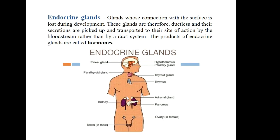Here comes endocrine glands. These are glands whose connection with the surface is lost during development. These glands are therefore ductless, and their secretions are picked up and transported to their site of action by the bloodstream rather than by a duct system. The products of endocrine glands are called hormones. This diagram shows the location of different endocrine glands in a man.